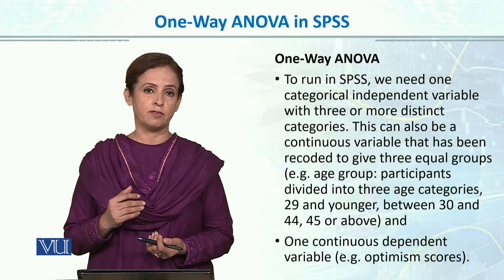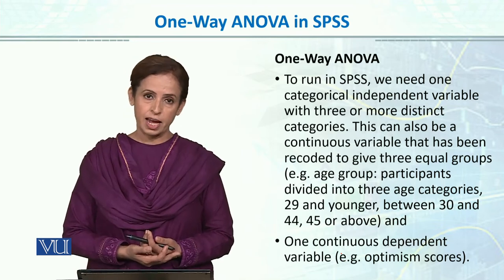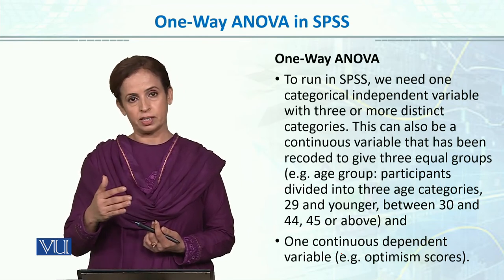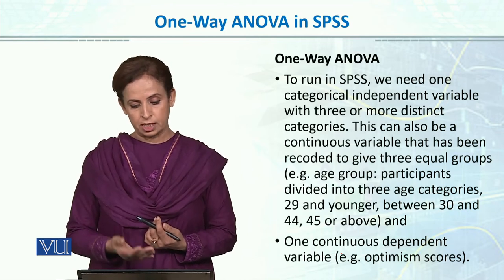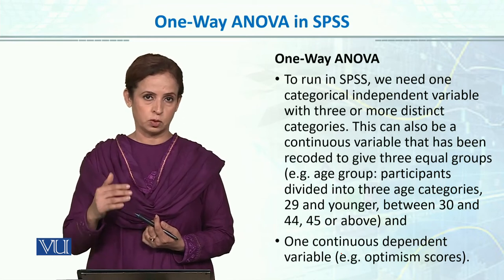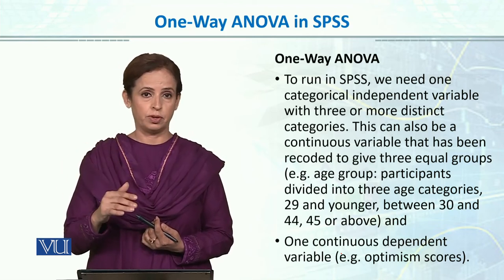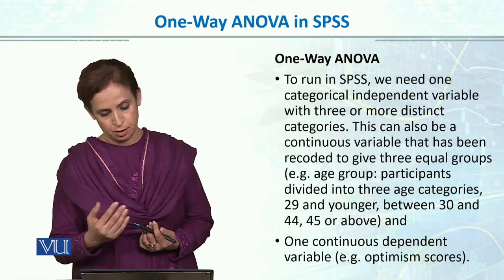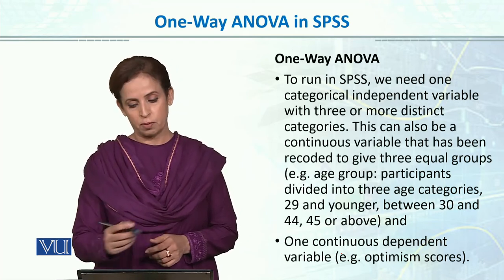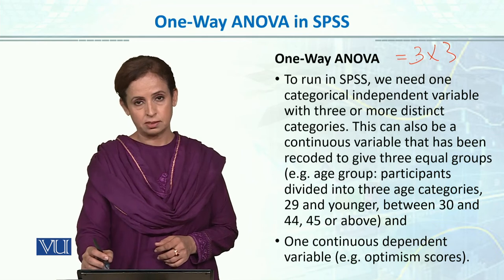We can add more than one independent variable — then we call it factorial ANOVA. For example, if we add age of participants as another variable, we can group them into three age categories: 29 and younger, between 30 and 44, and 45 and above. Now we have two independent variables: teaching style with three levels and age with three levels, and a continuous dependent variable — the score. This is a two-way factorial ANOVA, written as three by three.